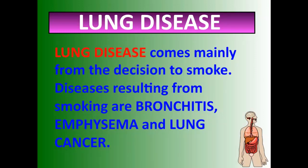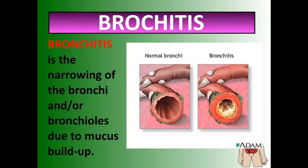Some lung diseases come in three forms, often from the decision to smoke: bronchitis, emphysema, and lung cancer. Bronchitis is the narrowing of the bronchi with a lot of mucus buildup — cigarettes contribute gunk and mucus deposits. You can feel your chest being heavier because there's mucus in your lungs instead of air. People who have had bronchitis know that heavy chest cough.